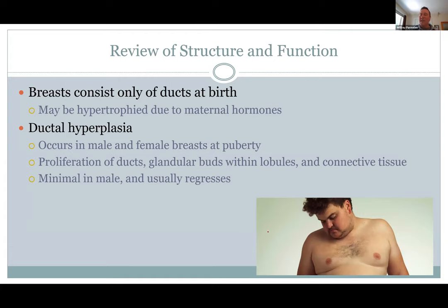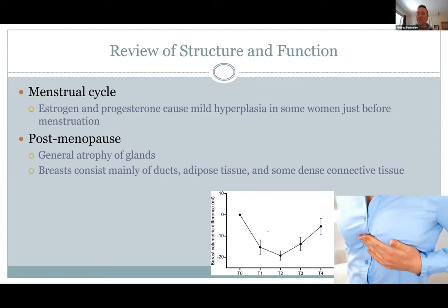Pre-pubertally and in males, you just have ducts but no glandular tissue — that doesn't develop until under the influence of hormones. Males have nipples but only rudimentary ducts, with no tissue to make milk. During the menstrual cycle, hormones rise and fall, so some women have tenderness and breast enlargement around ovulation and their period. Every month the breasts respond to those hormone changes.